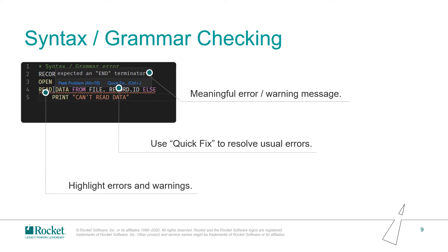We have talked about many features related to code editing. These features can help us write Basic programs better. However, no matter how good the editing features are, errors are always inevitable during programming. In our product, we hope to provide a better error checking and correction experience. A base feature of error checking is that code with syntax errors will be highlighted. From the screenshot, we can see there is a syntax error in the read statement, and the entire line of code is marked by a red line. When we move the mouse to the place where there is a syntax error, the error message will be popped up.